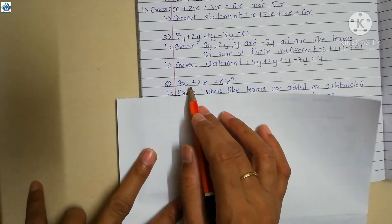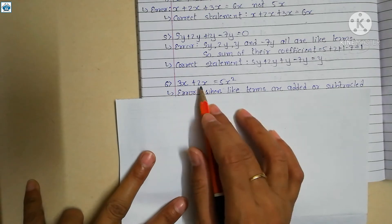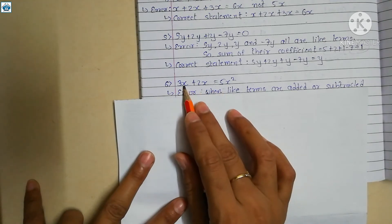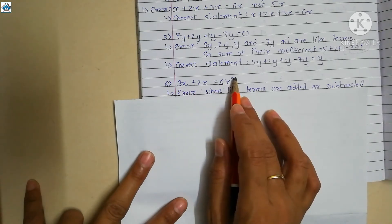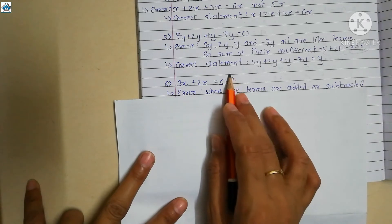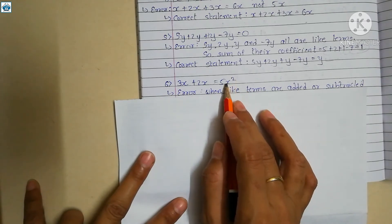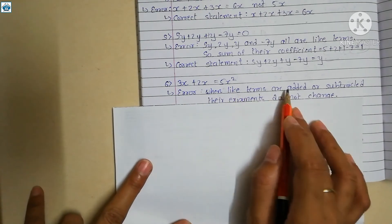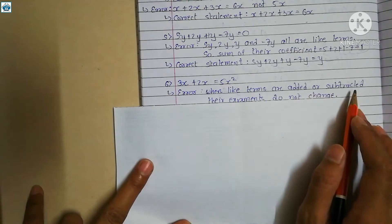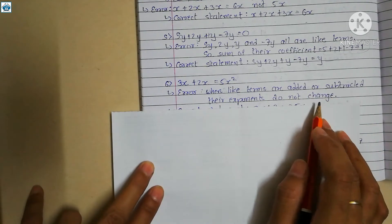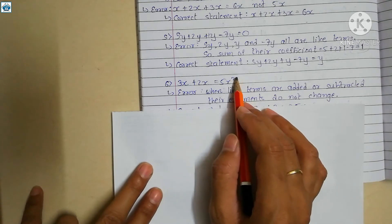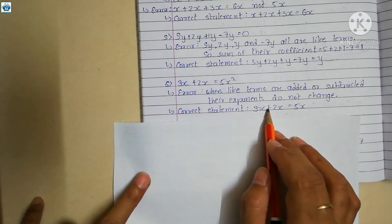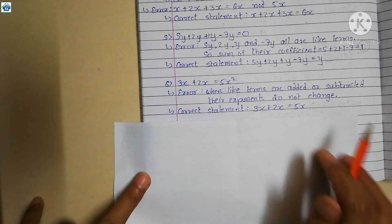The sixth statement is 3x plus 2x equals to 5x squared. The coefficients 3 plus 2 equal 5, that part is correct. But when like terms are added or subtracted, their exponent does not change. So x remains x, not x squared. The correct statement is: 3x plus 2x equals to 5x.